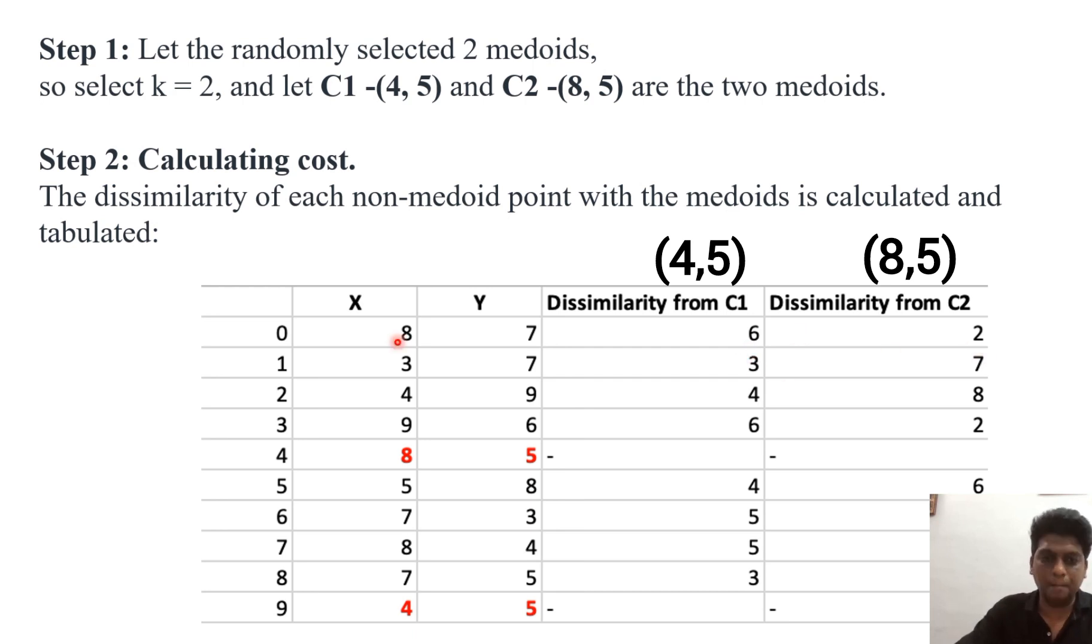This is how this 6 value comes here. Dissimilarity from C2. Compare this 8,7 with this 8,5. Now 8 minus 8 is 0 plus 7 minus 5 is 2. So 0 plus 2 is 2. So this is the dissimilarity from C2. Likewise you have to fill this column and fill this column.